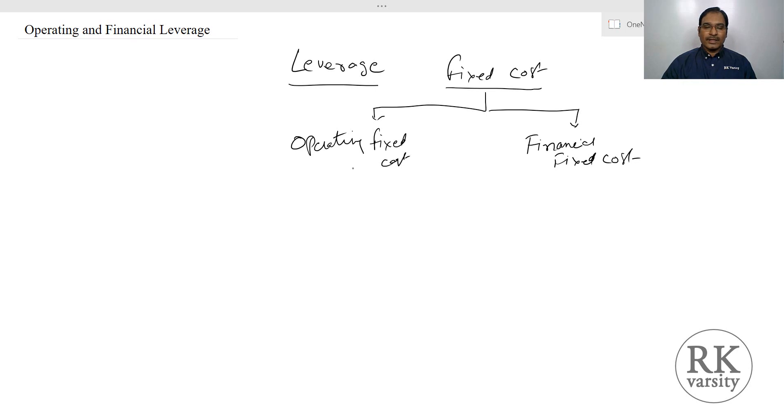So when we talk about operating fixed costs, the examples of operating fixed costs are like depreciation, fixed marketing expenses, rents, etc.